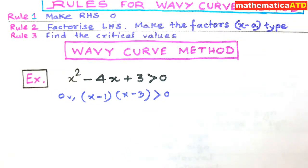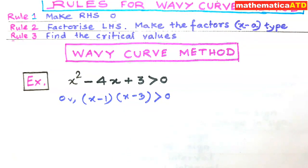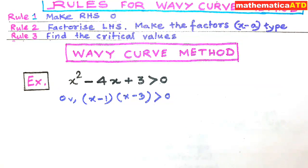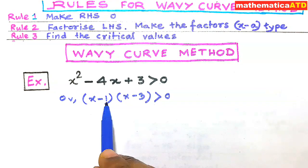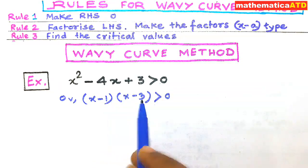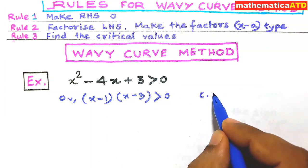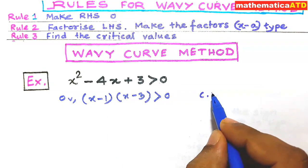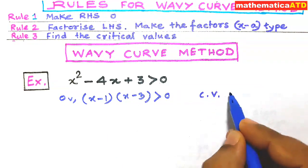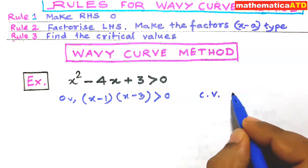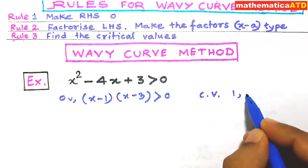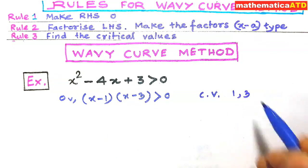Rule number three is: find the critical values. Here the critical values are 1 and 3. So the CVs are respectively 1 and 3.